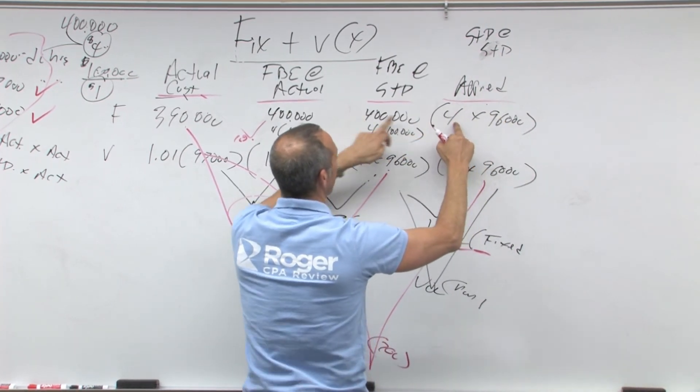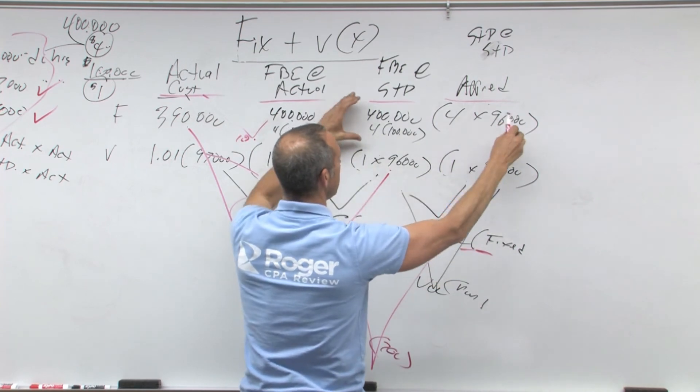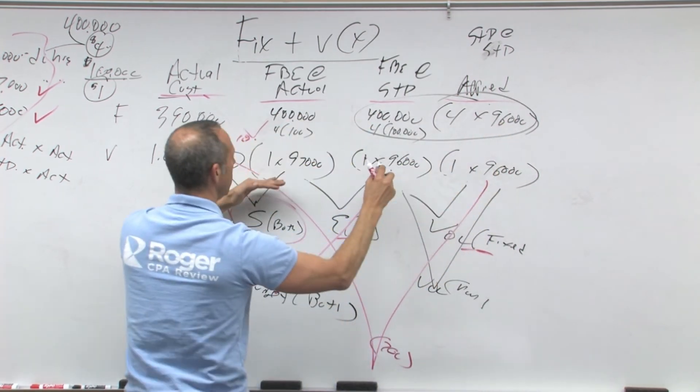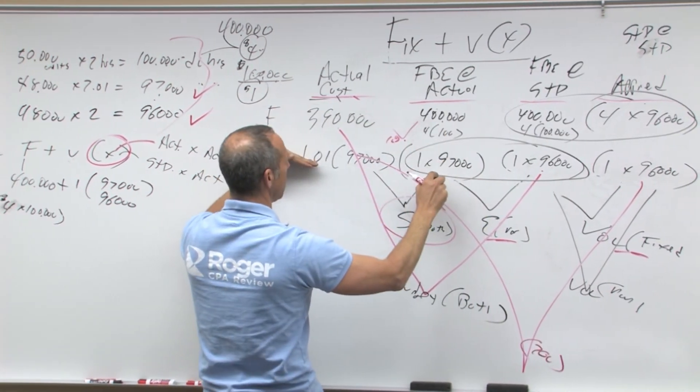You would have applied the four dollars at 96, here you would have applied a dollar at 96. So notice here, this is the difference, all fixed. Here this is the difference, all variable. Here, both are different.